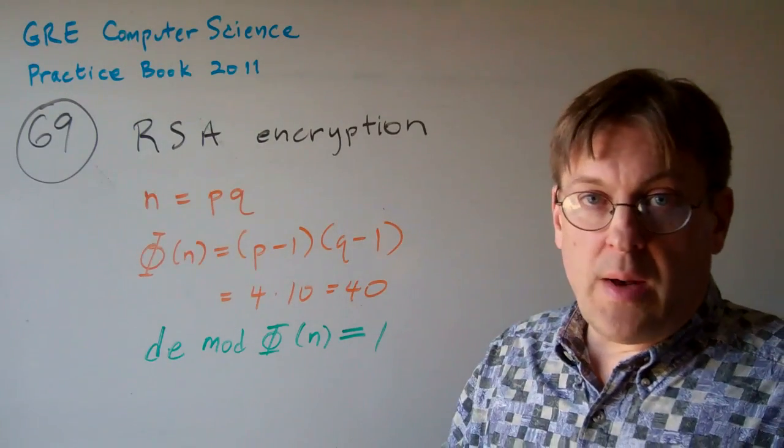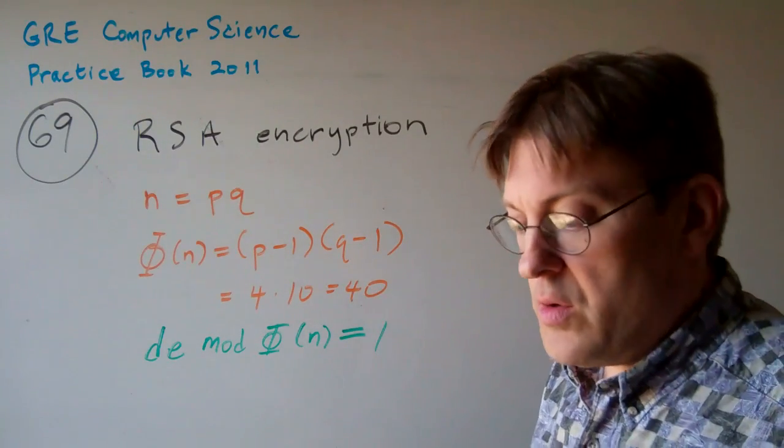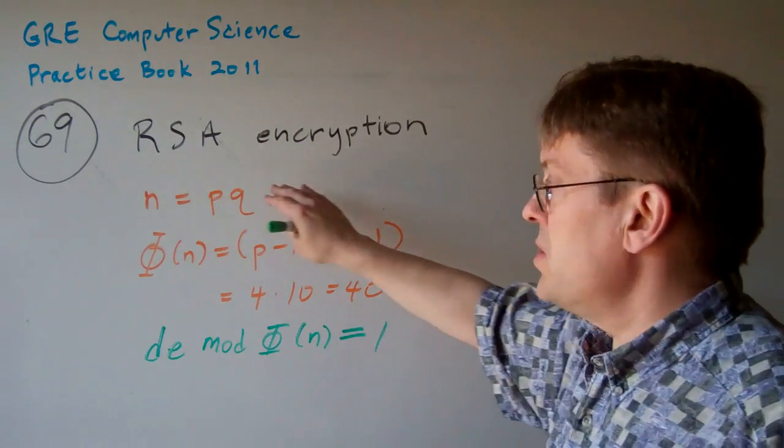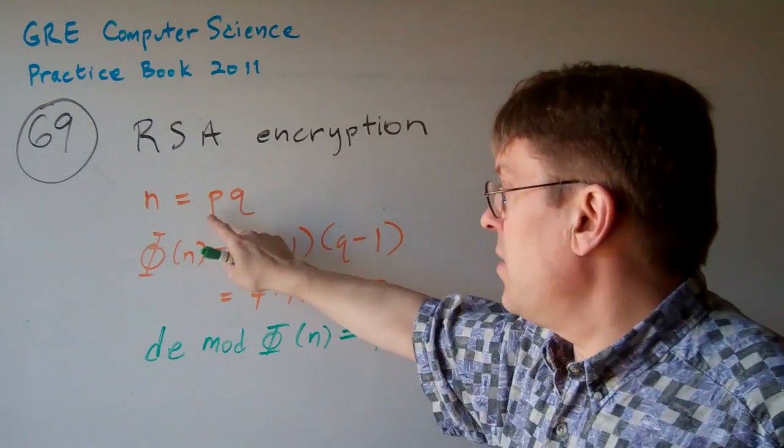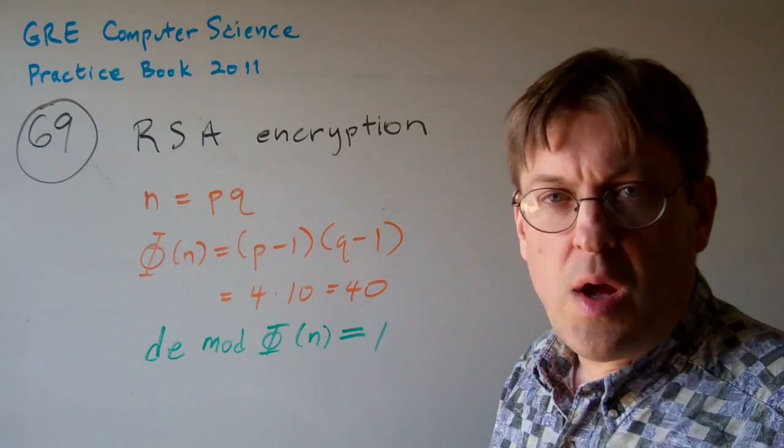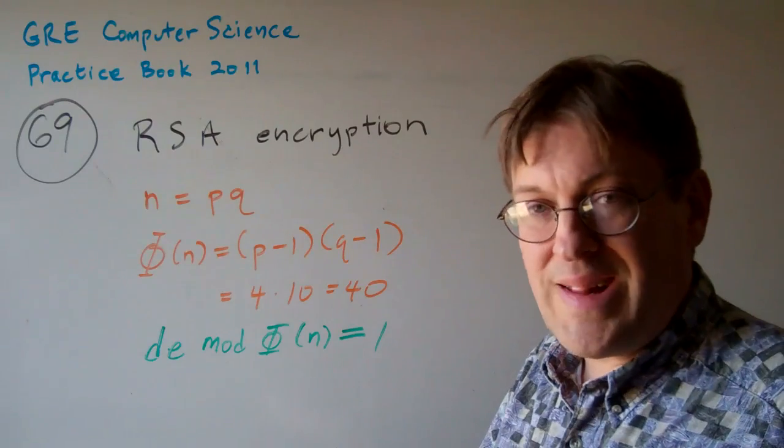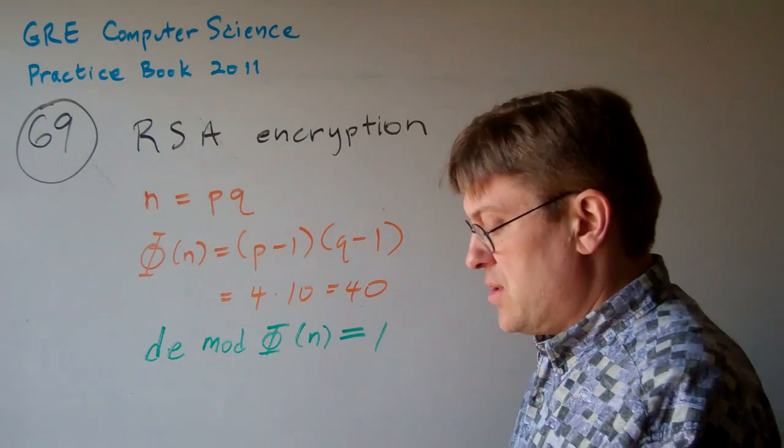Well, you can't really figure this out, you have to know the totient function. But basically for RSA encryption, N is P times Q, and usually P and Q are prime numbers. They have to be relatively prime numbers.